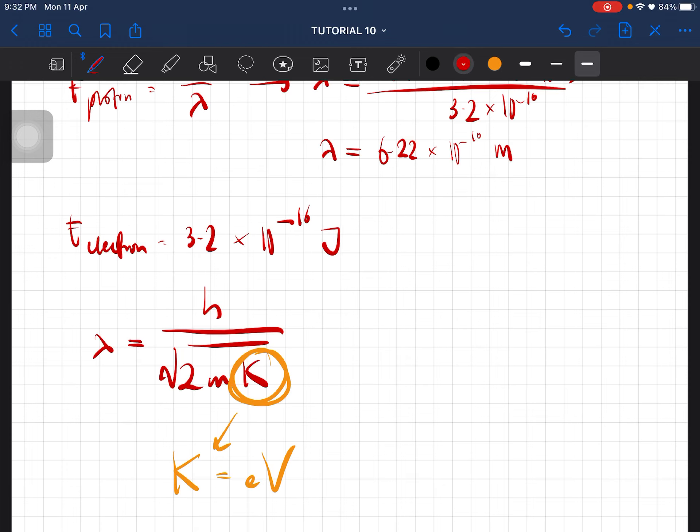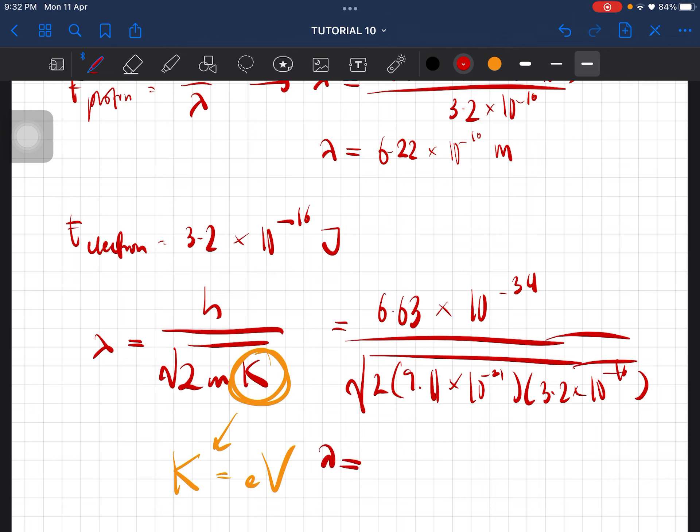So from there, you will then just substitute all the values. So you should get 9.11 times 10 negative 31, 3.2 times 10 negative 16, so you should get the de Broglie wavelength to be equal to